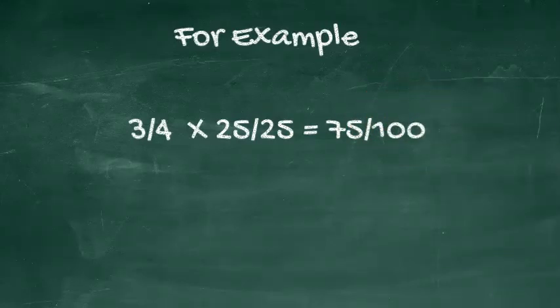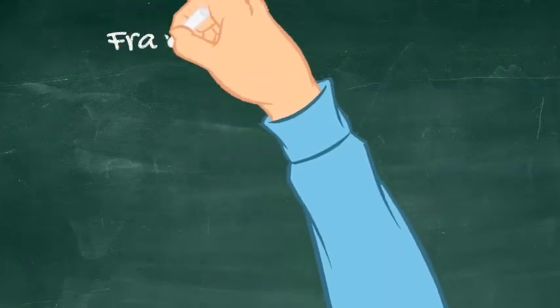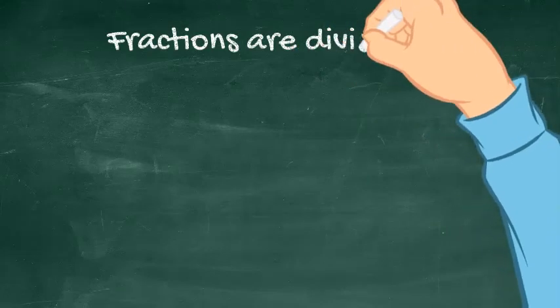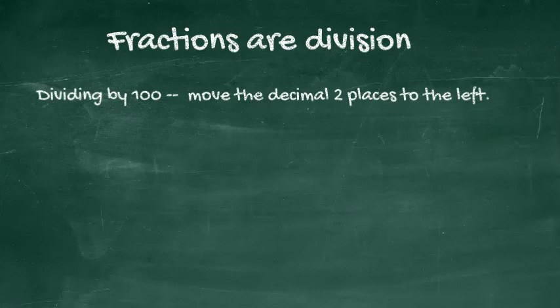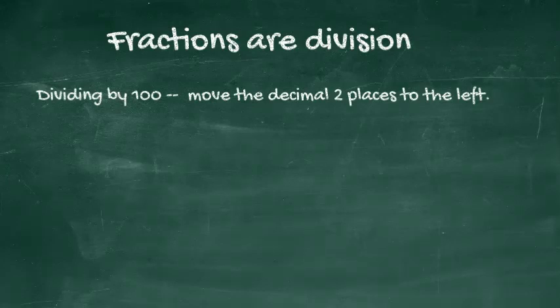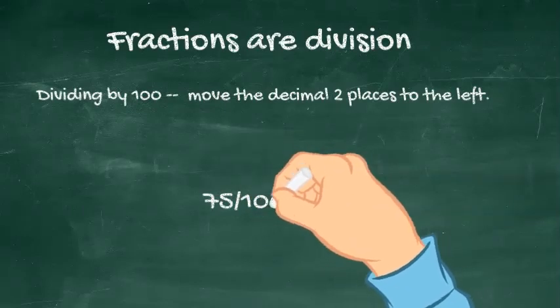4 times 25 is 100. So multiply the numerator by 25, which is 75 over 100. We know fractions are really a division problem, and we also know that dividing by 100 means we move the decimal two places to the left. So 75 over 100 equals 0.75.